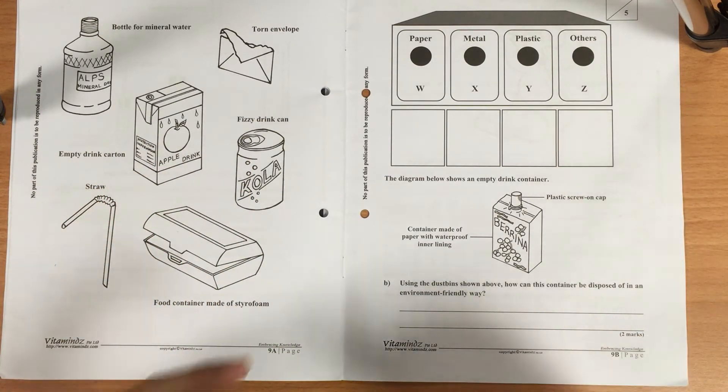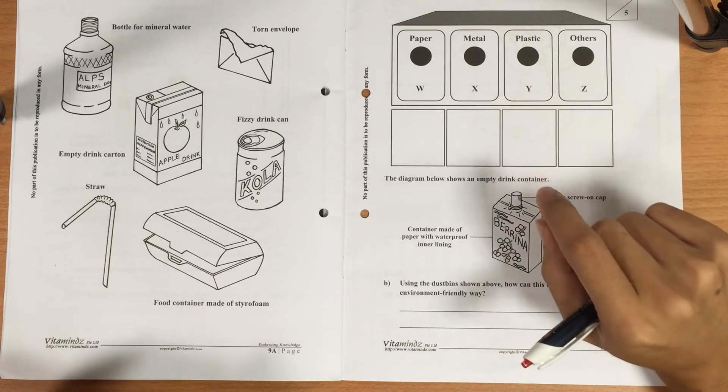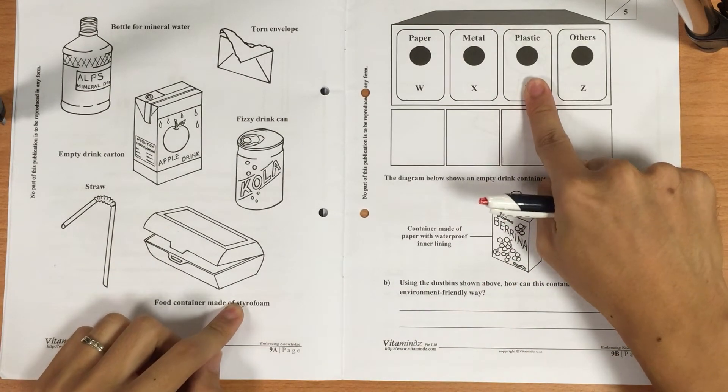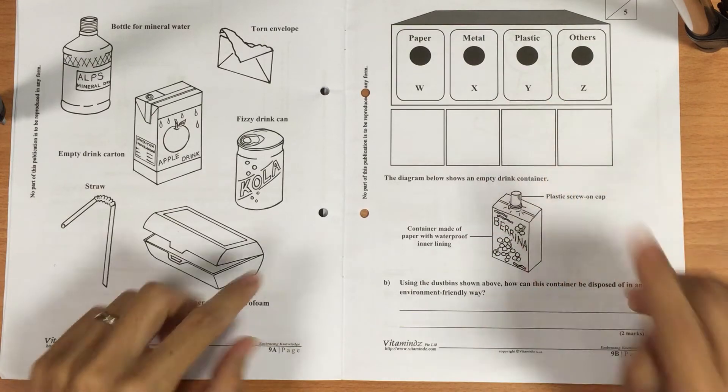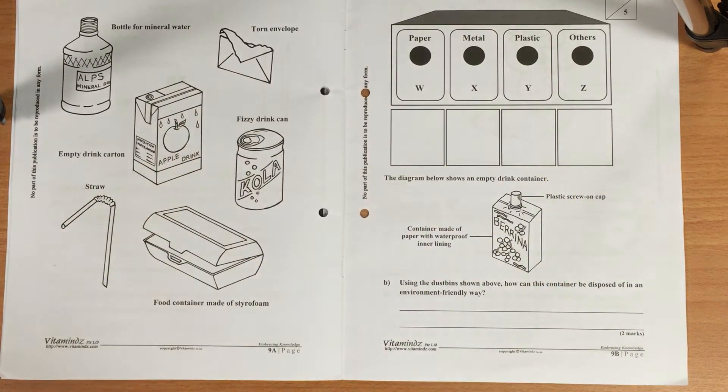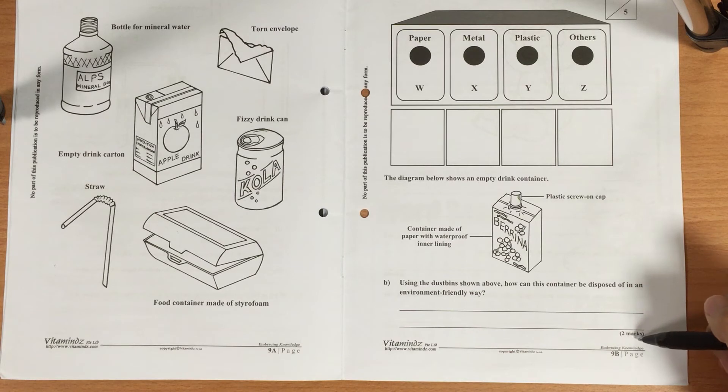Another good way for you when you face this kind of question is to check whether you have answered the question completely. Maybe you can look at the marks as well. It says two marks, so it shouldn't be that simple as in a one-word answer. Usually there are two parts to this kind of question, so look at the marks as well.